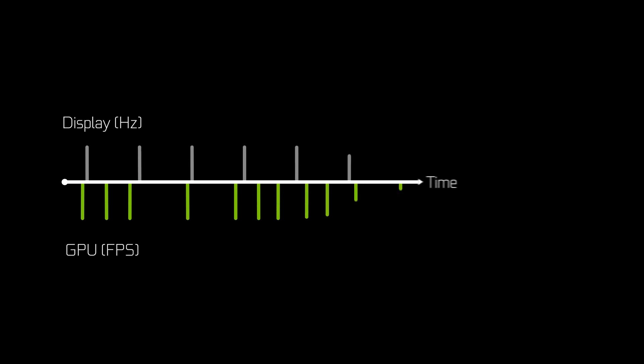For high frame rate gaming, you want both of these to be as high as possible. One clarification: we've made a simplification by assuming that our GPU rate, or frame rate, and our display rate, or hertz, are the same thing. While this doesn't typically happen in the real world, it helps with understanding the fundamental concepts.